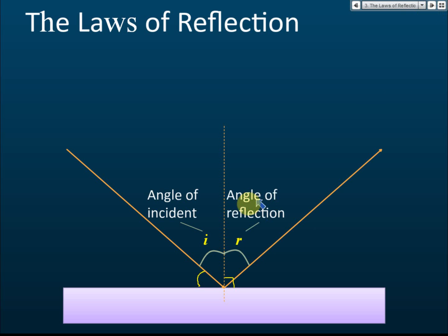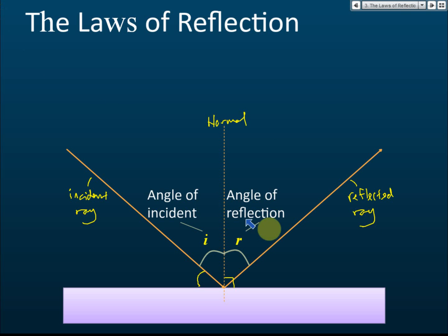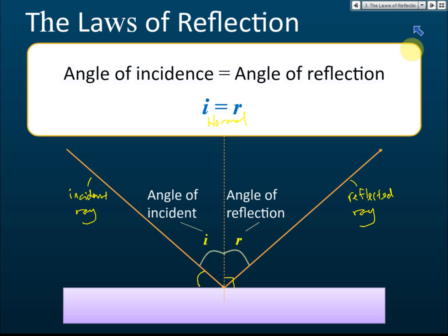The angle between the normal and the reflected ray is called the angle of reflection. So the terms you need to know are: normal, incident ray, reflected ray, angle of incidence, and angle of reflection. Always remember — all angles must be measured from the normal.